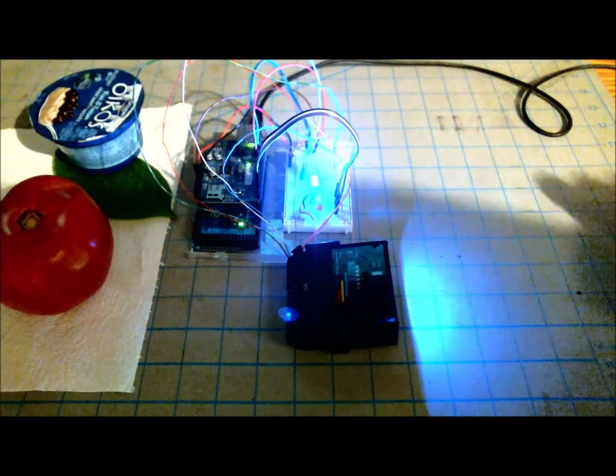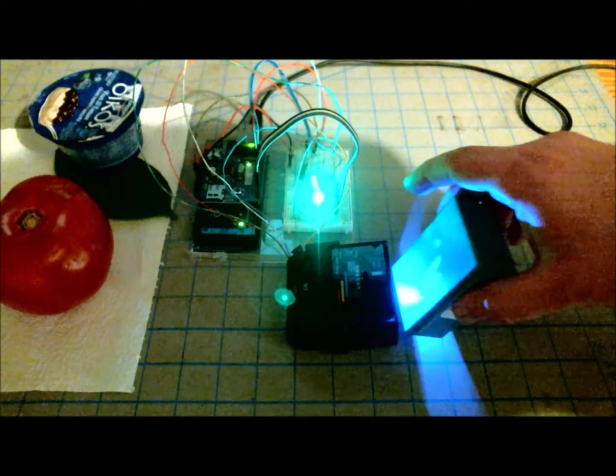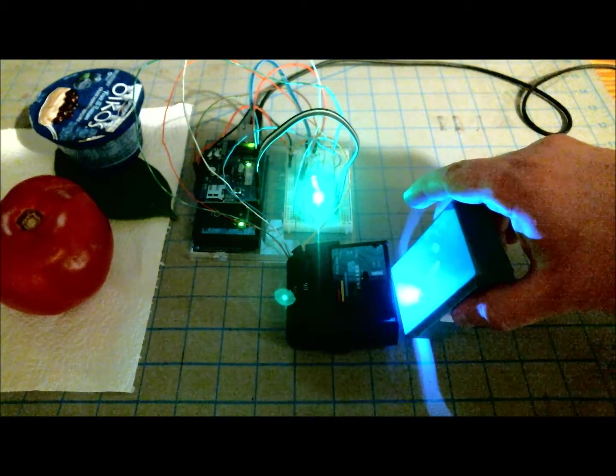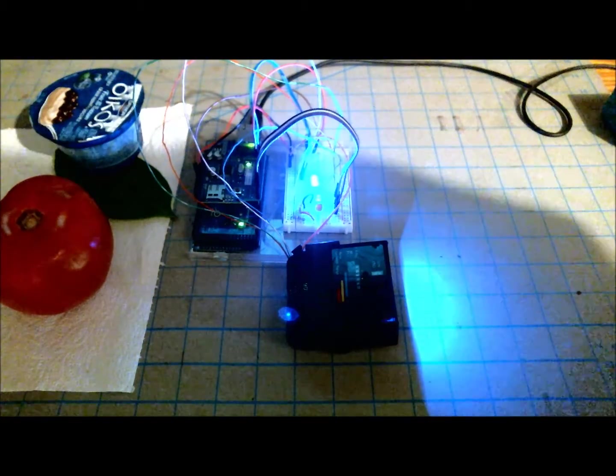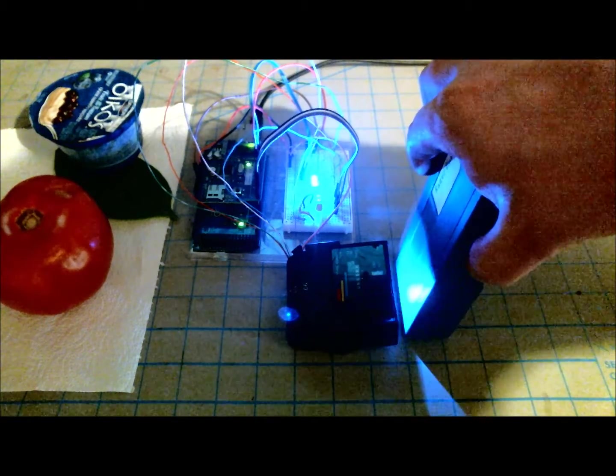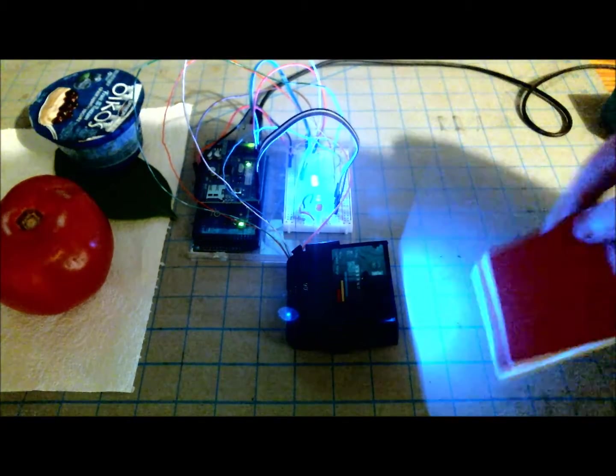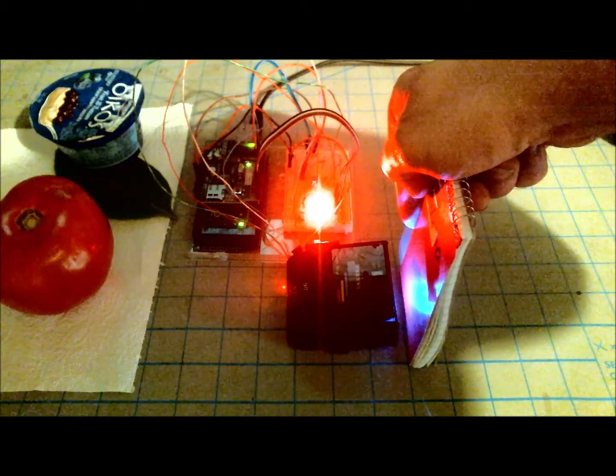So if I take a green object and place it near the color detector, the green LED comes on. And if I take a blue object, the blue LED comes on.